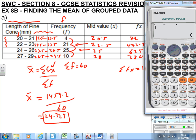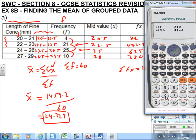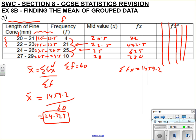Press AC, then Shift 1 (STAT) — don't press Mode as that will clear everything. Press 4 for Var, then 2 for X̄, and press equals. You get 24.325. Practice both the manual and calculator methods in your Starting with Confidence booklet. Well done for finishing!